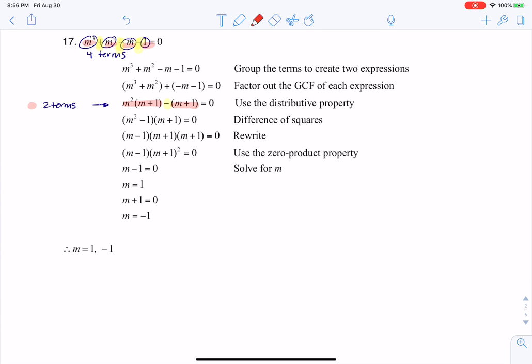Now the thing about these two terms - they have an m plus one in common. So I can factor that common term out. I'm left with m squared and then minus one. The minus one comes from the fact that there's really a one in front of there.